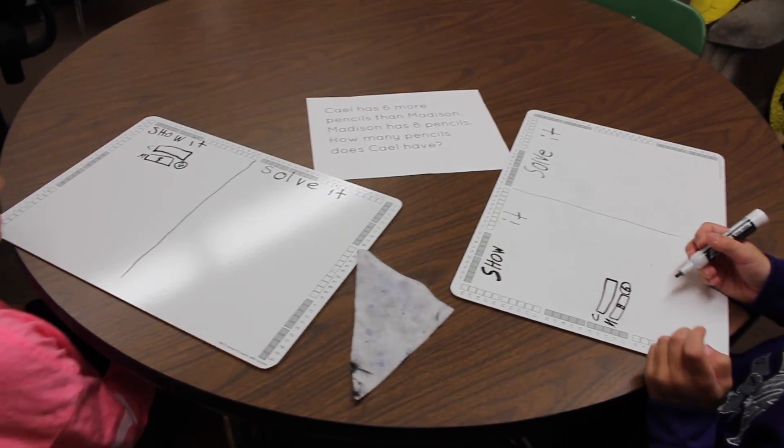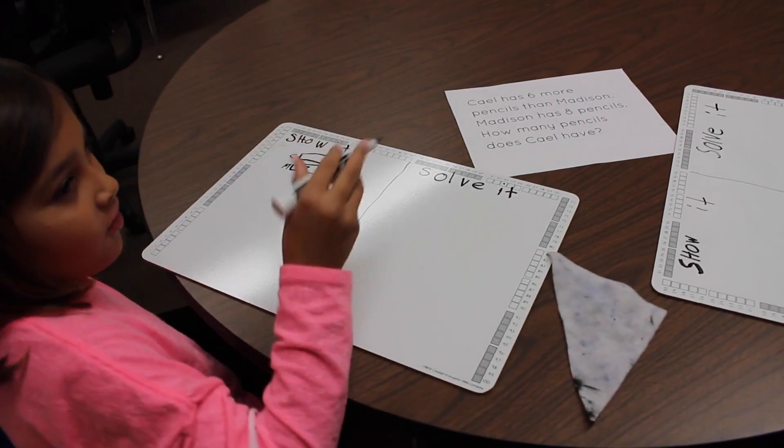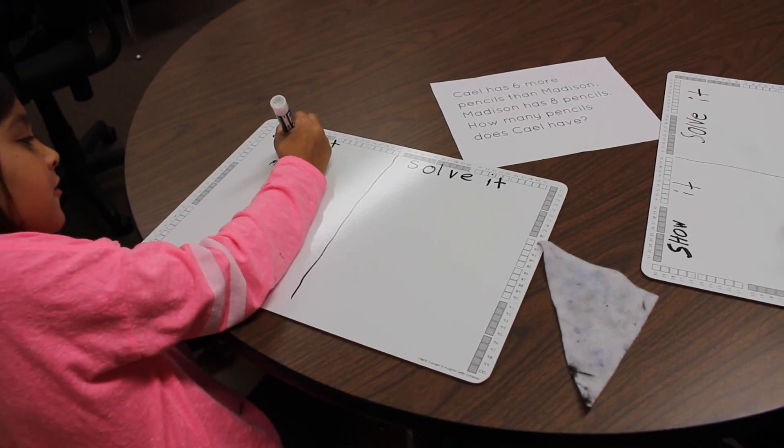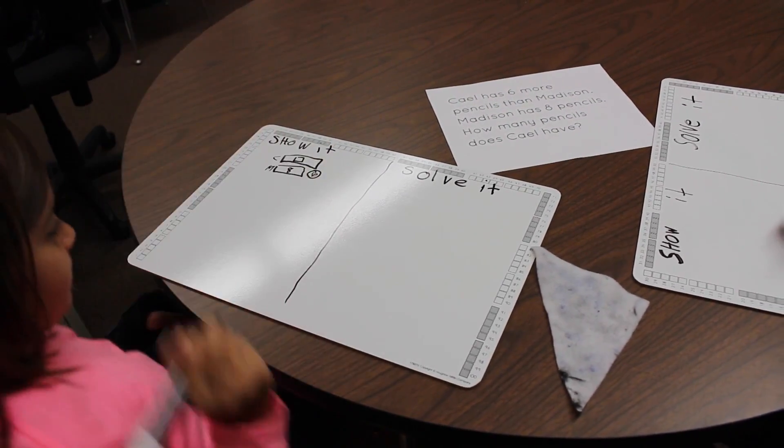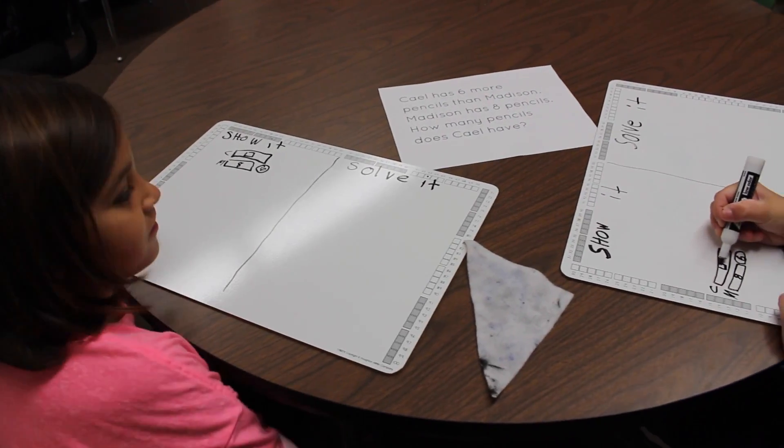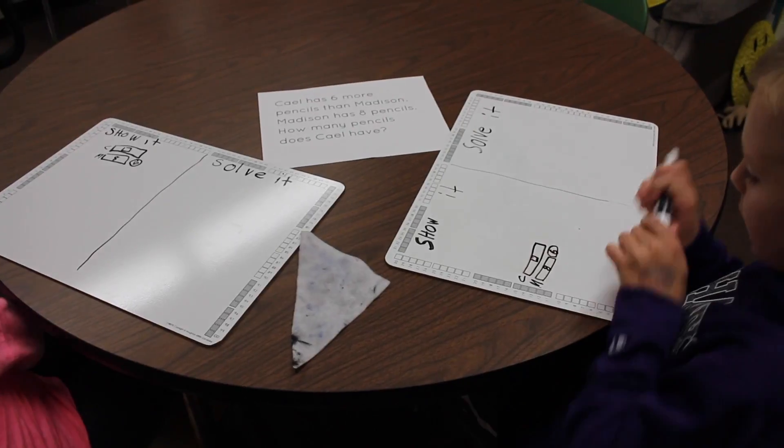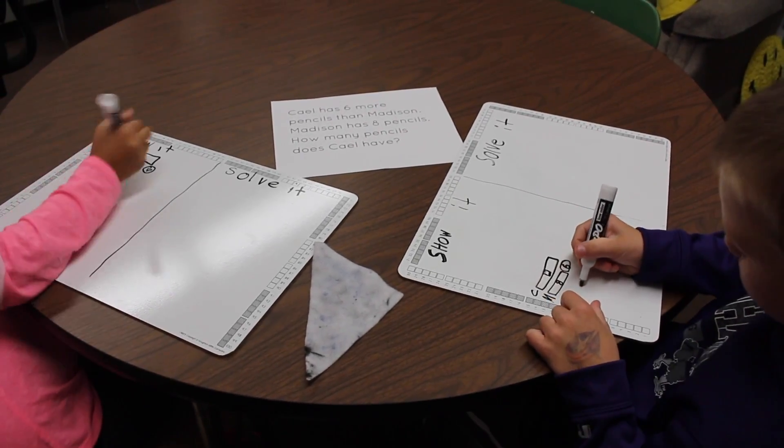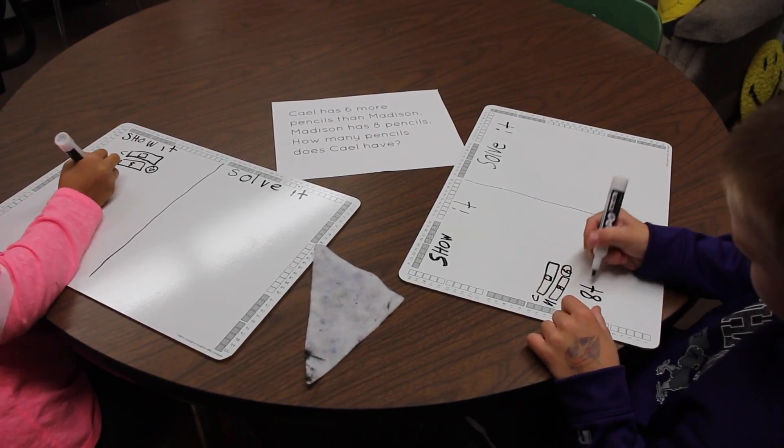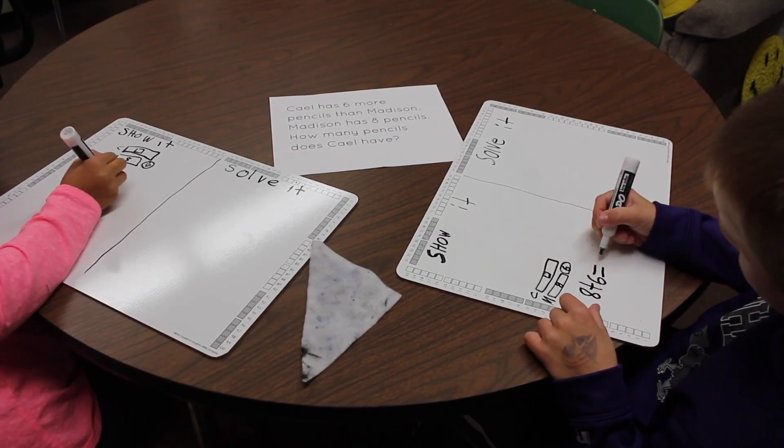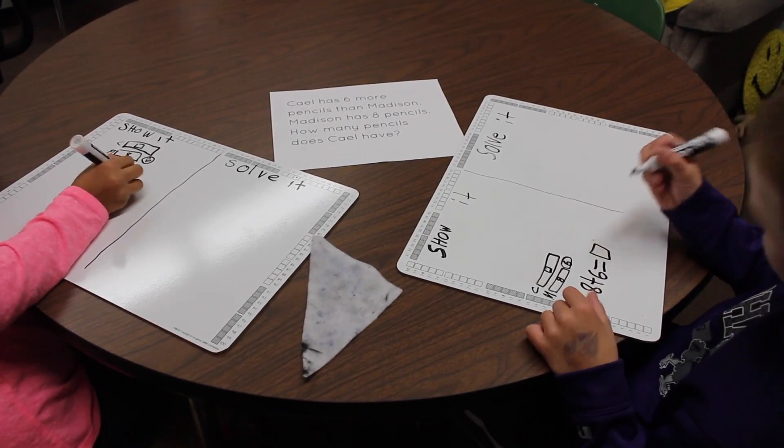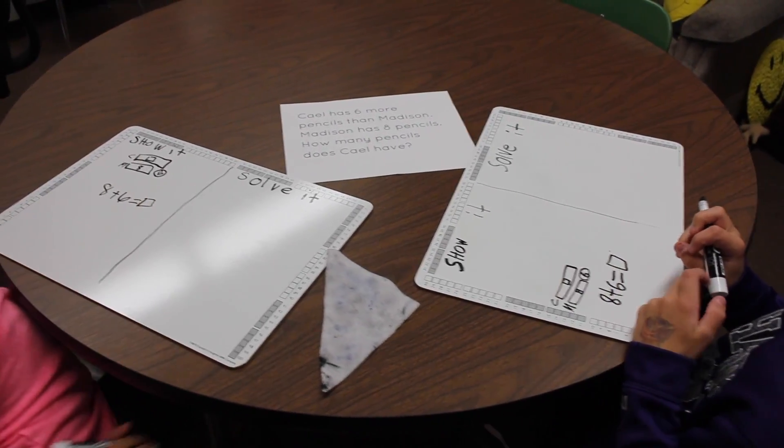What about in Cal's bar? We can put in a question mark or a box. Why? We don't know how much Cal has. Okay. Could you also write an equation that matches the story? Yes.